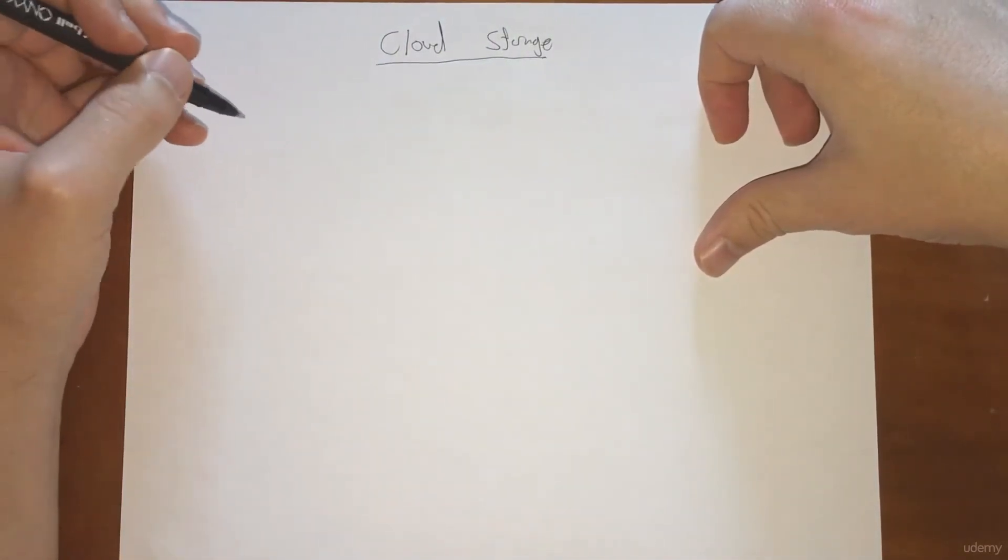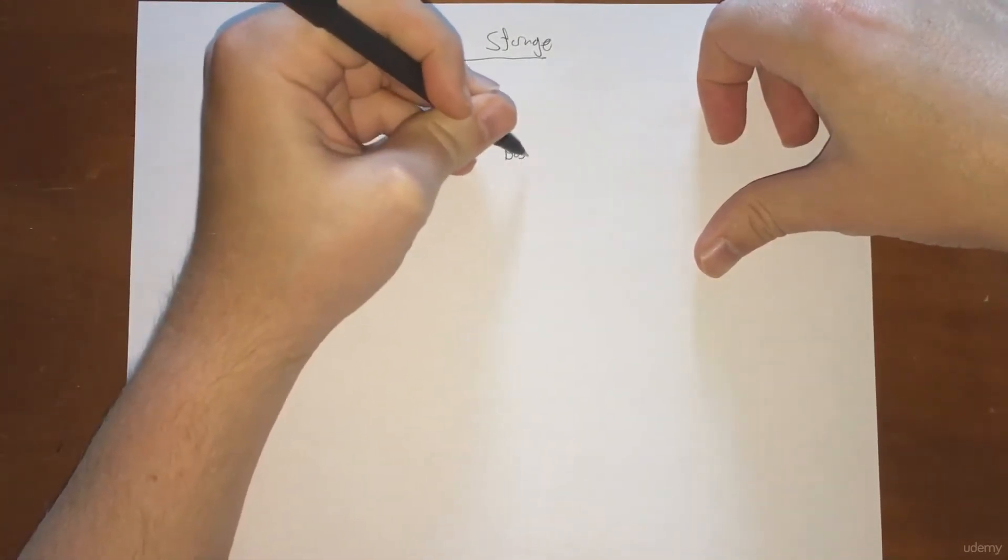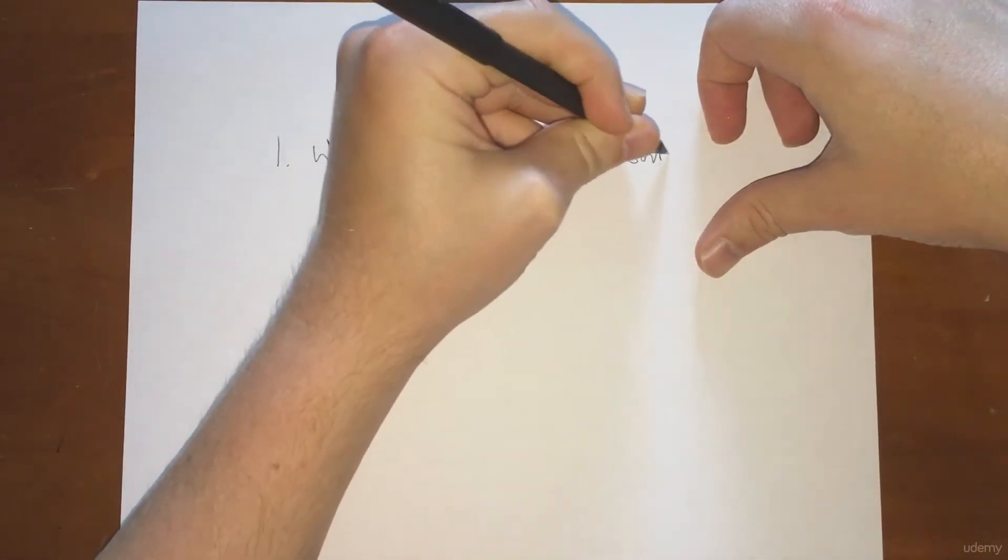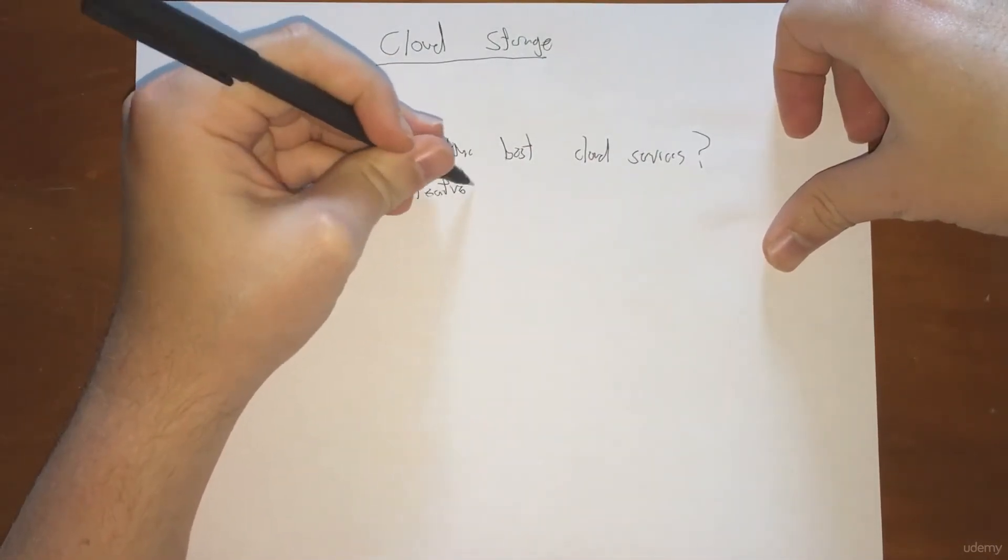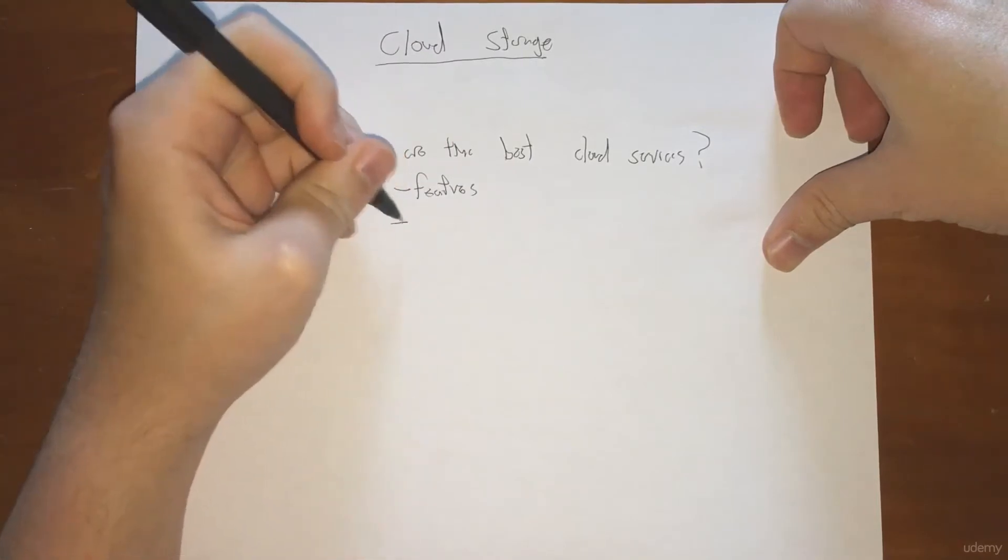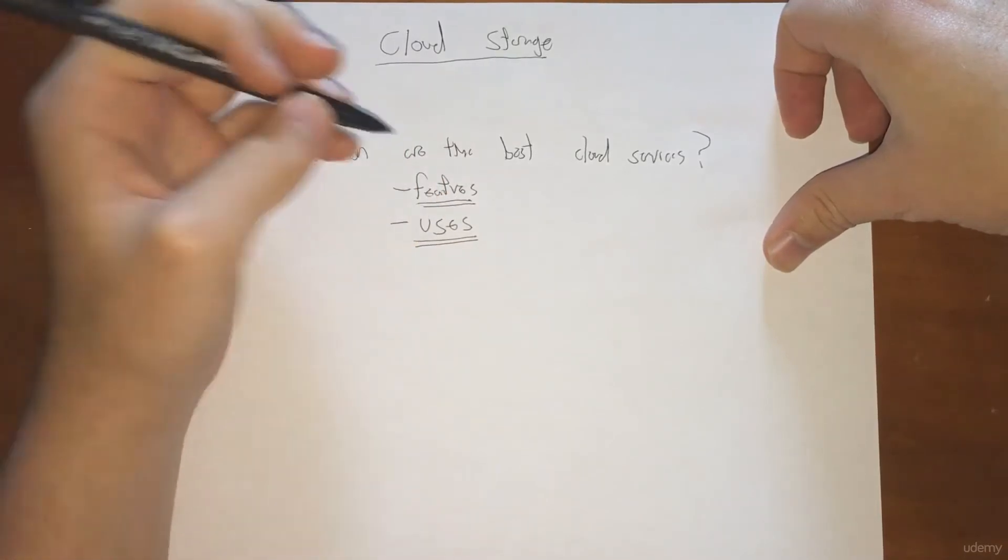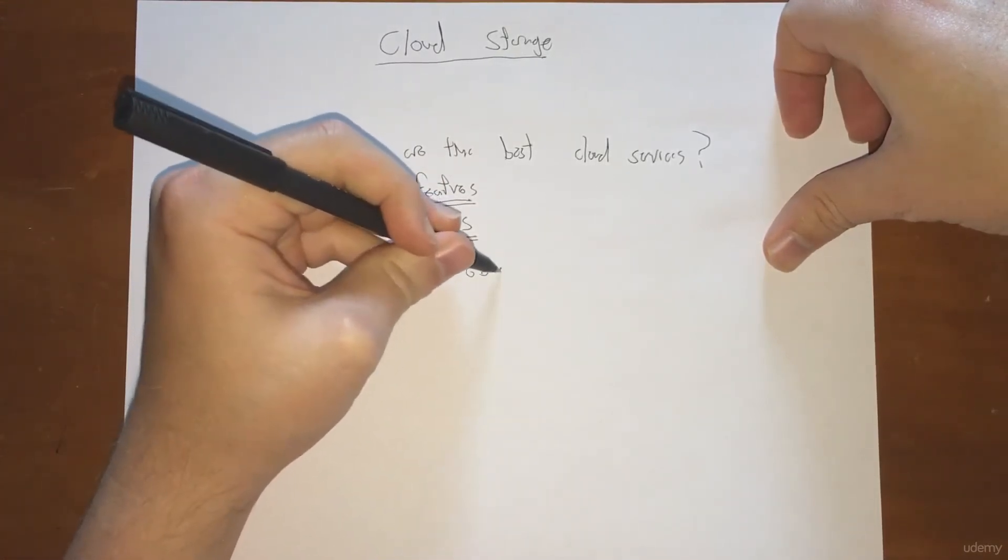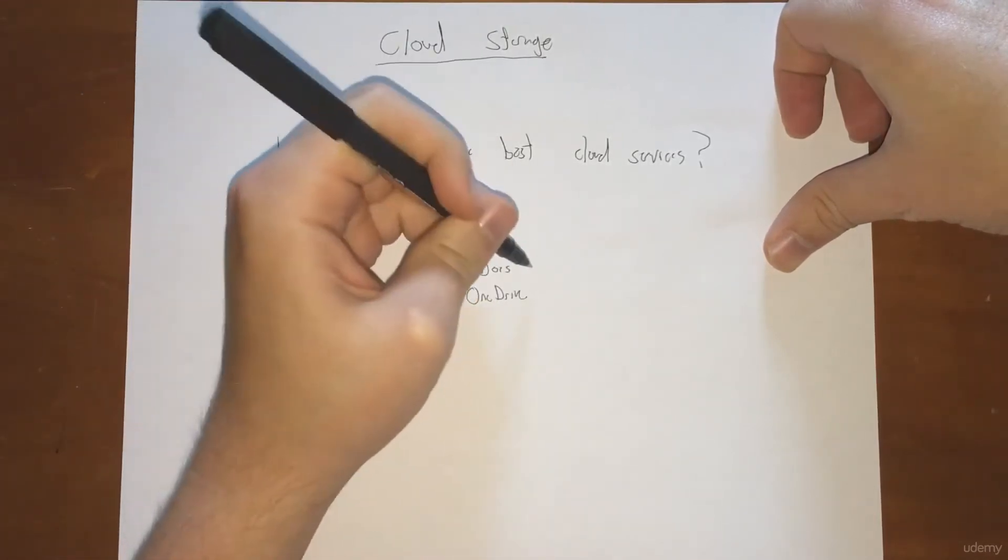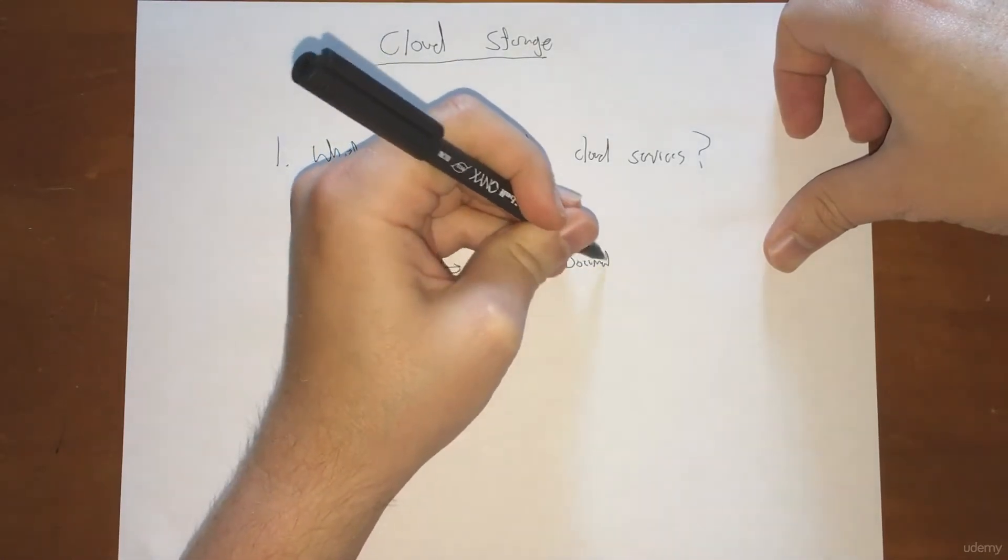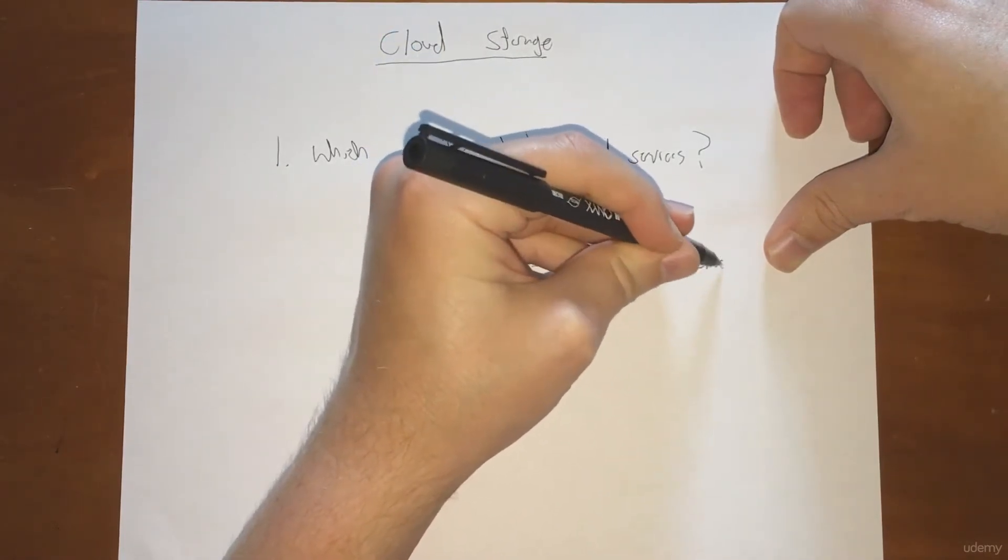So what we're going to be doing is covering number one, which are the best cloud services. We're going to talk about features because they really all have a slightly different set of features, and then when do you use them. We're going to be talking about things like Google Docs or OneDrive. You have documents that you can only store in Google Drive, so how do you take that into account?